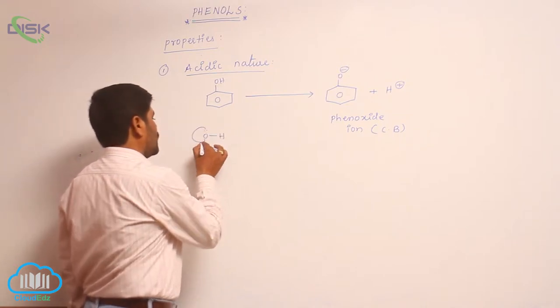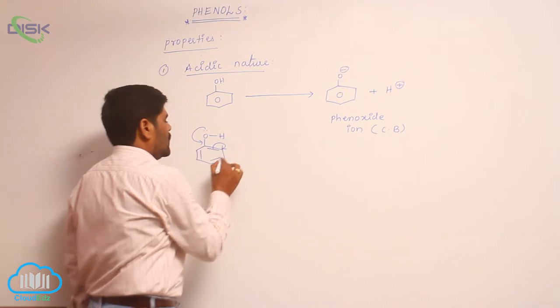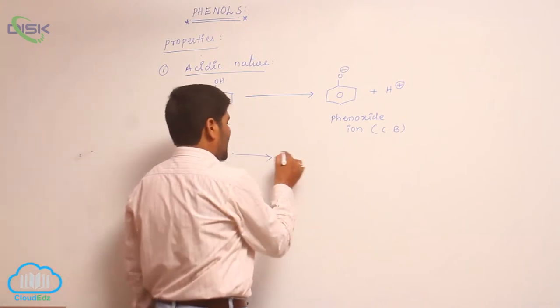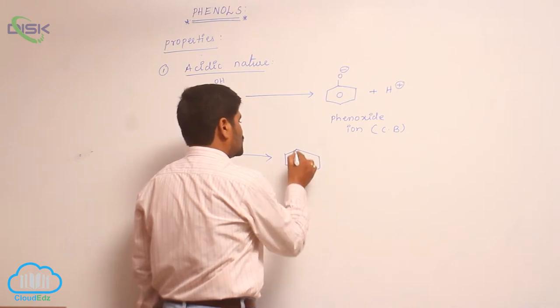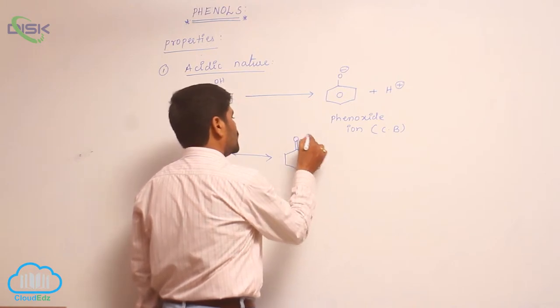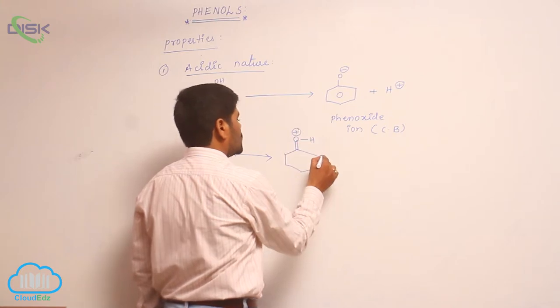When proton is present on phenol, the more electronegative atom carries positive charge. So therefore, these structures are unstable.